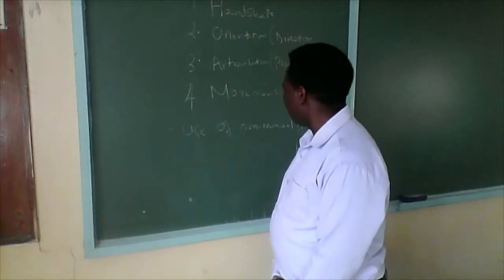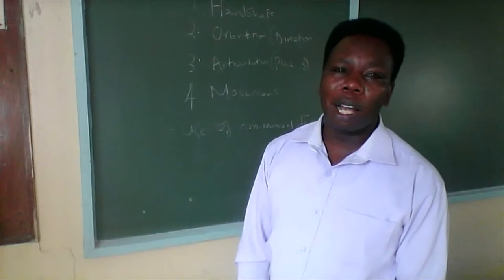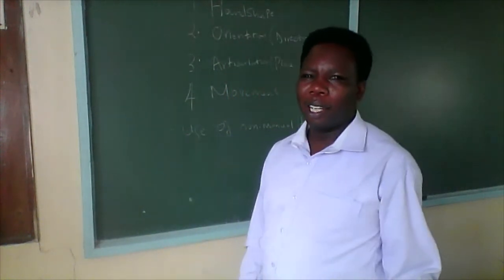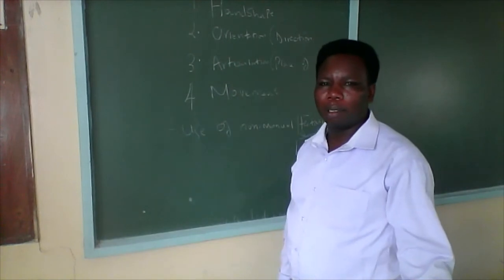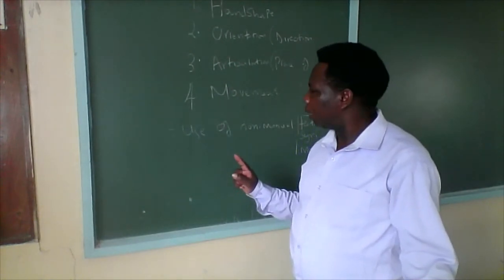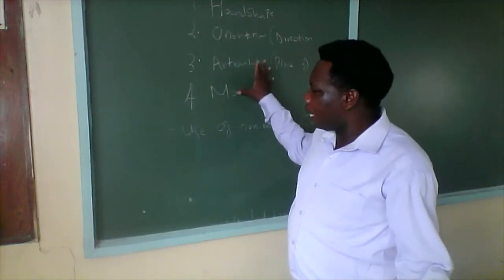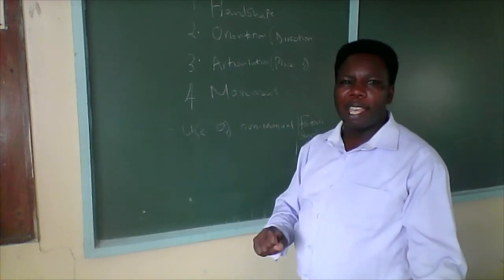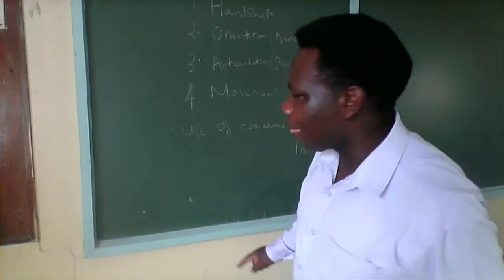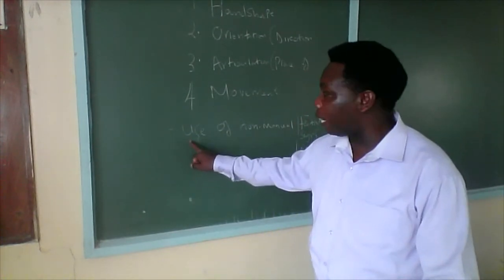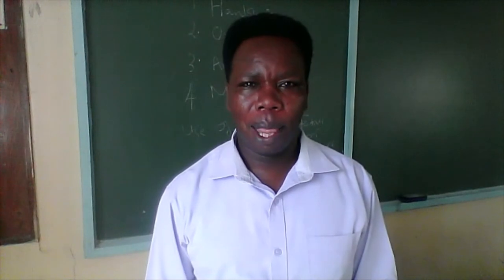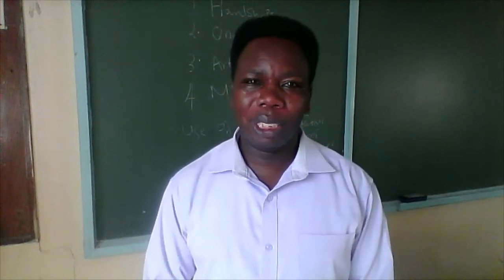These four are combined together to make one particular sign. There is no sign without these four elements, and I want you to remember that. When you form the sign, for it to get the true meaning or convey the intended meaning, then we need to use the fifth one — the use of non-manual features: facial expressions, body movements, and such.